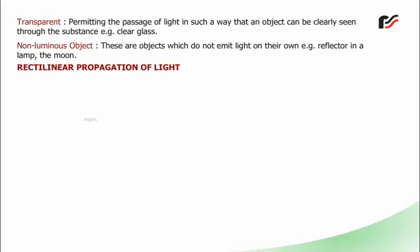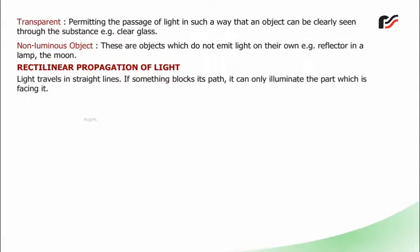Rectilinear propagation of light: Light travels in straight lines. If something blocks its path, it can only illuminate the part which is facing it.